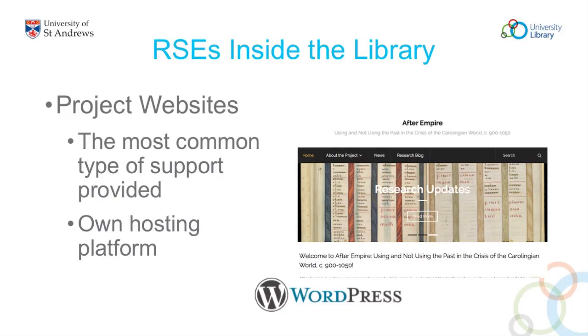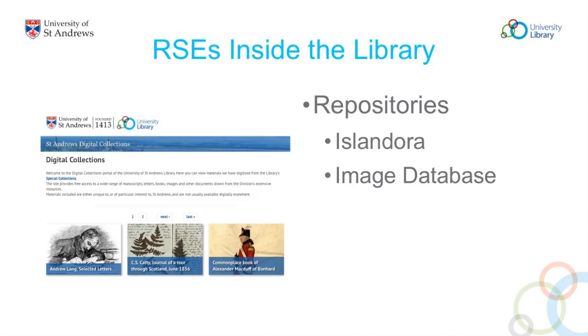When we actually carry out development work, the most common kind of support — even if we're doing something more complex — is simply providing the project website. We've got our own hosting platform and we generally use WordPress for that. We have an instance of Islandora, which is a repository stack based on the Fedora repository software and the Drupal content management system. We use that as a backend for a number of web applications, both within the library and outside. The image database is a longstanding application developed in-house over 10 years ago, in which images are described using the Visual Resource Association Metadata Schema, used a lot to support teaching in art history and as a backend for research project websites.